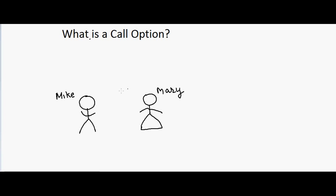Let's talk about call options. Mike is bullish — he thinks the market is going to go up. Mary thinks the market is pretty much normal with no significant upside or downside. Both of them are investors, and Mary holds Google, which is currently at $700.